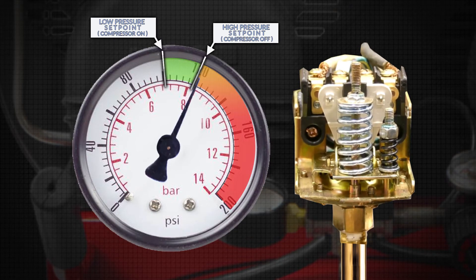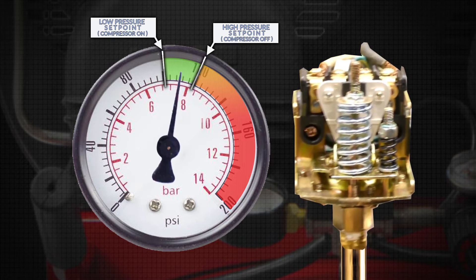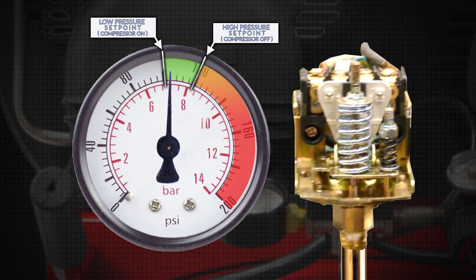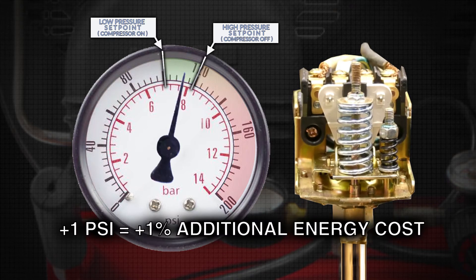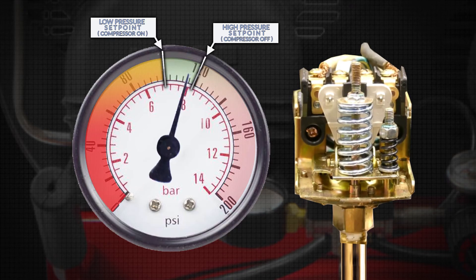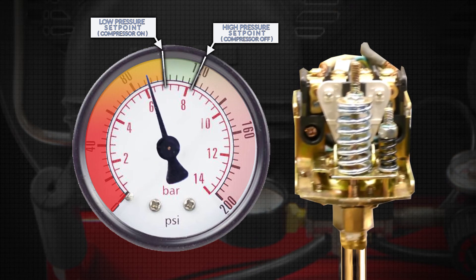For each PSI above the set point, there is an increase in pump cycling time and power consumption in order to maintain the higher than necessary pressure setting. The overall energy cost to the owner is roughly increased one percent for each PSI above. For each PSI below the set point, there is a reduction in air tool performance which directly affects work quality.